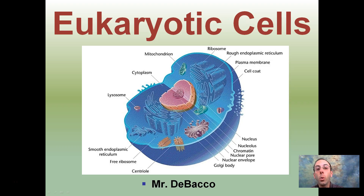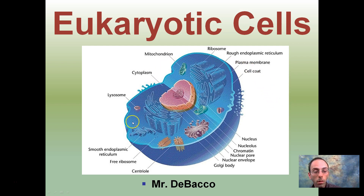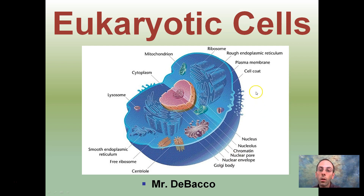This is going to be a very quick overview of eukaryotic cells. Looking here is an example of just a model — this is an animal cell — and looking at some of the components and what basically allows you to look at this and define it as a eukaryotic cell. We're not going to go over any of the individual organelles; that'll be saved for another video.